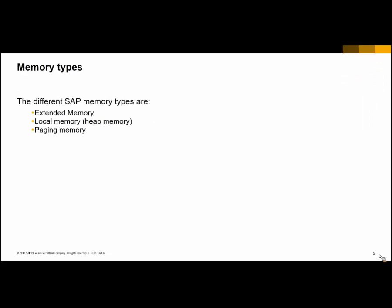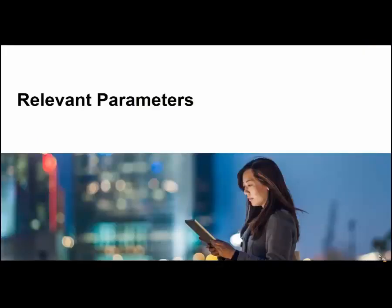This memory is also called heap memory and can be divided into brief memory and proc memory. There are three memory types available at SAP level: extended memory, local memory (also called heap memory), and paging memory. We will describe each area and the corresponding parameters that are used to control them in the following sections. Now we will see the relevant parameters that should be known on each of these areas.